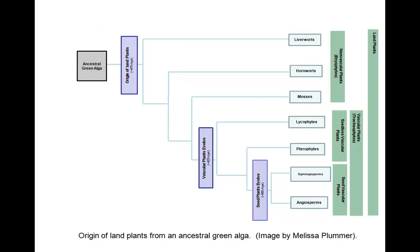Shown here is a phylogenetic tree, which depicts the origins of land plants from the ancestral green algae. We categorize land plants into non-vascular — the bryophytes — and the vascular — the tracheophytes. Examples of bryophytes are liverworts, hornworts, and mosses. Tracheophytes are categorized into the seedless vascular plants — lycophytes and pterophytes — and then the seed vascular plants are broken down into the gymnosperms and the angiosperms.